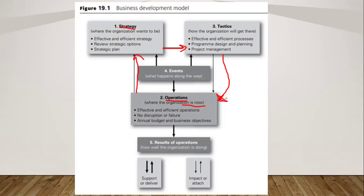You can see the arrow going up — because we evaluate operations first, then we create strategy. Then we develop our tactics: we develop more effective and efficient processes, we program new and improved designs — possibly process design — and then come up with a new project, and then employ it back into operations. So it goes in a cycle. Now, the lighter line represents 'impact or attach' and the bold line represents 'support or deliver.'